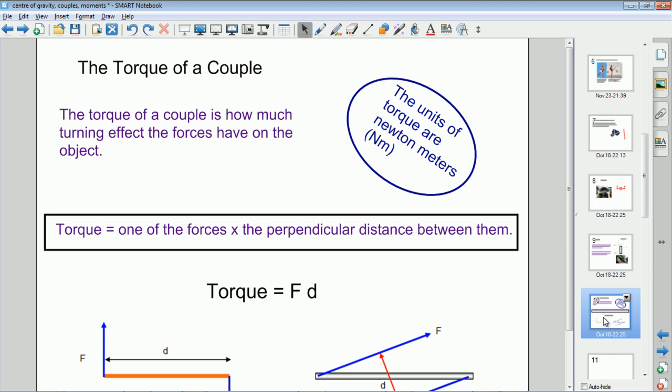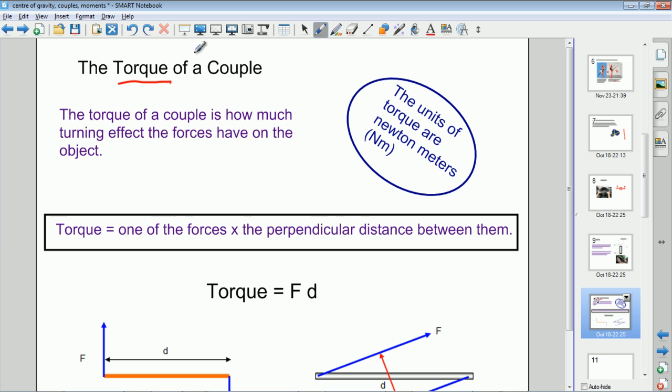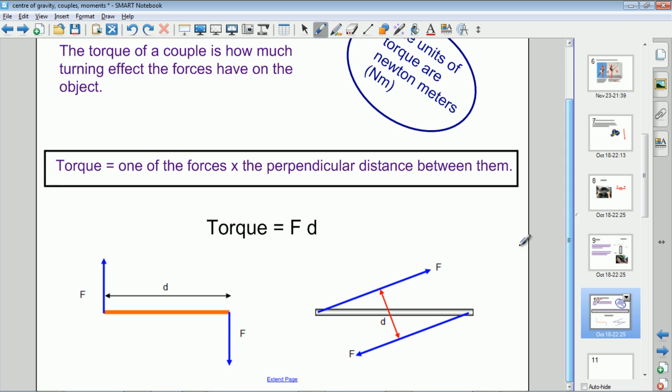We can actually work out how much the couple will cause rotation of the object - the turning effect of the couple, which is also called the torque of a couple. So what we're going to do now is look at the torque of a couple. The torque of a couple is how much of a turning effect those forces have on the object, and it's defined this way. The torque of a couple is...